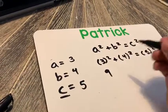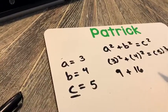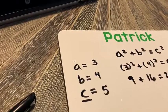When we do three squared, we get nine. When we do four squared, we get 16. And when we do five squared, we get 25.